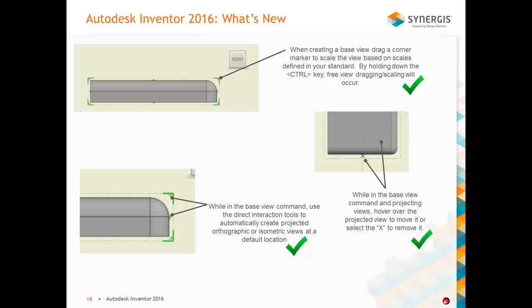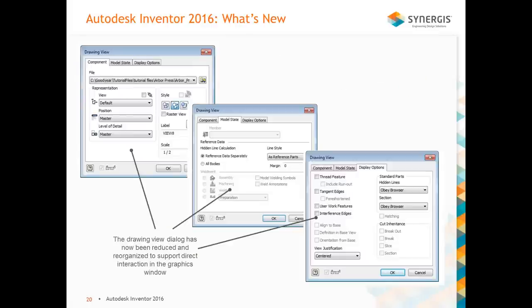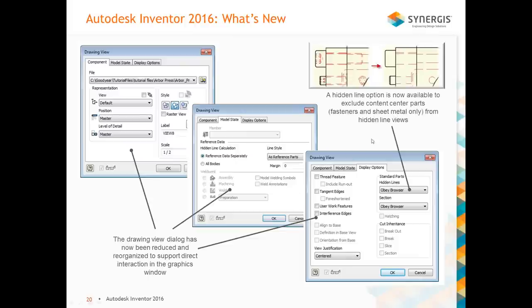When adding the base view, the projected views, and the direct editing tools are all available. The drawing view dialog has been reduced because a lot of that functionality is now built into the direct editing aspect. Content center parts now also have a hidden line option — you can control whether a part obeys the browser or uses a specific hidden line view representation. There's more additional functionality you can do with content center parts.